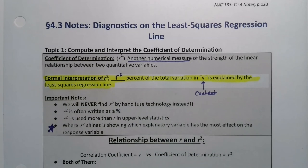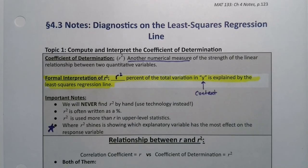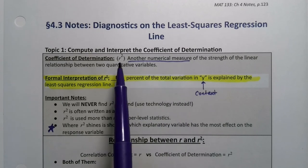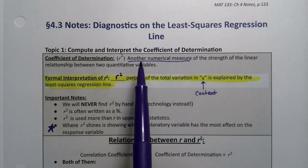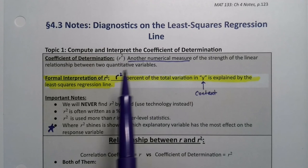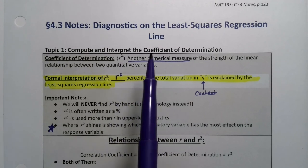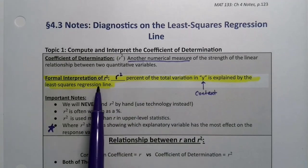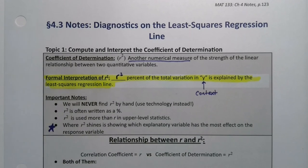Before we can leave Chapter 4 behind, we have to do a few more things with the least squares regression line. The first thing we want to look at is the coefficient of determination. That's r squared, and it's another numerical measure of the strength of relationship between two quantitative variables. Another measure because, of course, we already have r, which is the correlation coefficient.